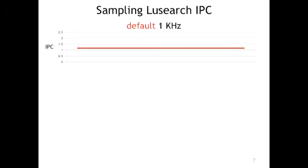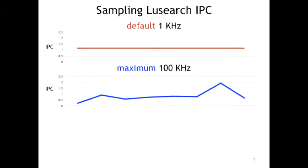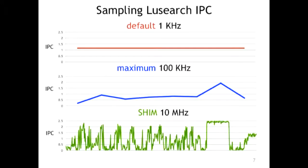Looking at a timeline view: at one kilohertz it's a flat horizon line, because on average the CPU behavior is very stable. At 100 kilohertz you get some trends — you can see some periods. And when you push to 10 megahertz, you see interesting patterns coming out.